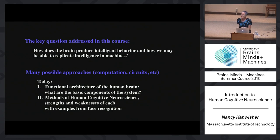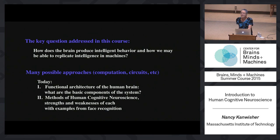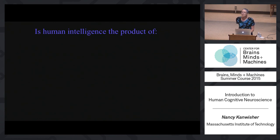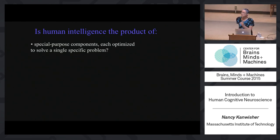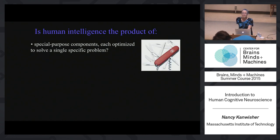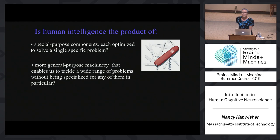I'll talk about the overall functional architecture of the human brain — what are the basic pieces of the system — and then get into different methods and what they tell us about face perception. At the most general level, we can ask whether human intelligence is the product of very special-purpose components each optimized to solve a specific problem, kind of like a Swiss Army knife where you have a saw for cutting wood and scissors for cutting paper — saws don't work well on paper and scissors don't work well on wood. Or whether human intelligence is the product of some more generic, all-purpose computational power that makes us generally smart without optimizing us for any particular tasks. To foreshadow the answer: as in all questions in psychology, the answer is both.